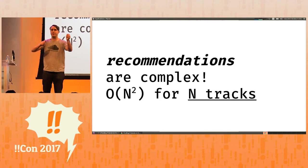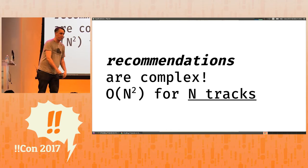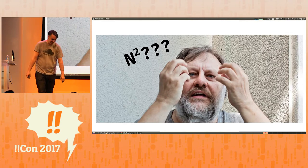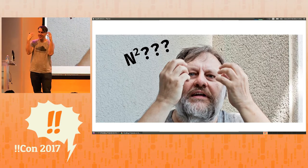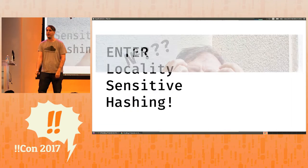It turns out that doing all these comparisons is really complex. If you have n tracks in your catalog, it will take n squared steps of your algorithm because you have to compare it to itself. And if your catalog of tracks is 130 million like they are at SoundCloud, then this takes just too damn long.